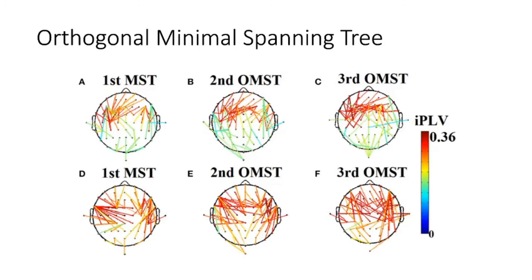These are minimal spanning trees from the study — the top is when the participant has eyes open, and the bottom is eyes closed. You can see differences between the two, with different proportions of high-weight edges. Red means high weight, blue means low weight, so it's not only high-weight edges — you also get low-weight ones included.